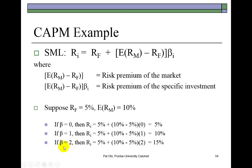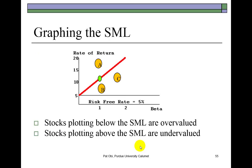If the beta of the stock is twice that of the market — which is 2 — then the risk premium of the stock would be twice that of the market. The market risk premium of 5% multiplied by 2 is 10%. So when added to the risk-free rate, we find that the equilibrium return of the stock becomes 15%. These are important examples that explain the essence of systematic risk.